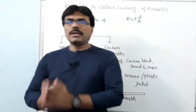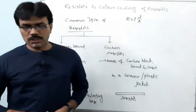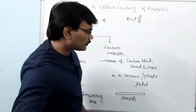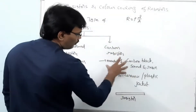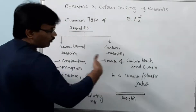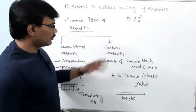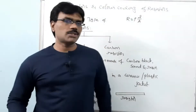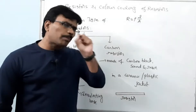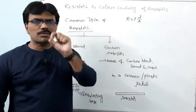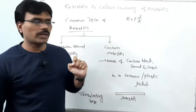The advantage of carbon resistors over wire-wound resistors is that they are cheaper, compact in size, and can be made over a wide range of resistance values. Higher values of resistance are not easily possible with wire-wound types, but with carbon resistors you can achieve any value just by taking the proper proportion of carbon black powder, sand, and resin. Color coding we are going to discuss applies to these carbon resistors, which are very compact — like a small thin wire.